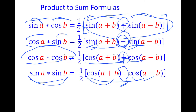One important thing to remember: for the first three formulas the coefficient is 1/2, but for the sine times sine formula the coefficient is negative 1/2. That is the only difference. The formulas might look a little complicated, but once you practice solving questions you will grasp the topic easily.